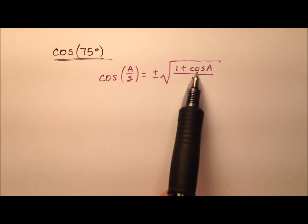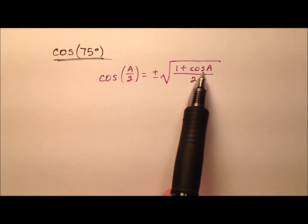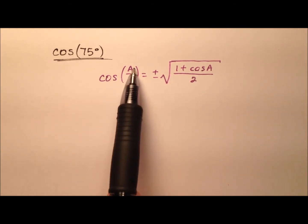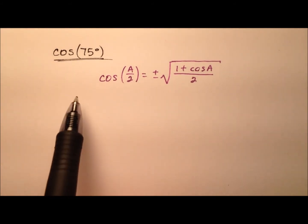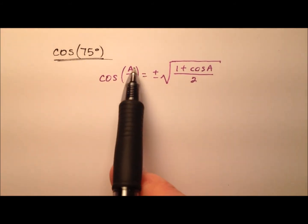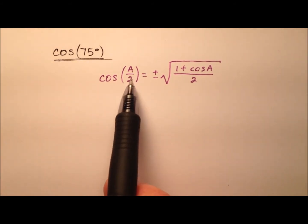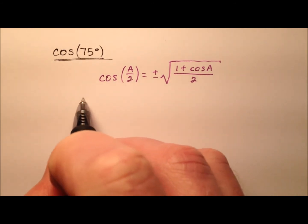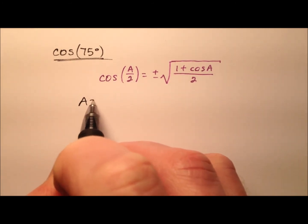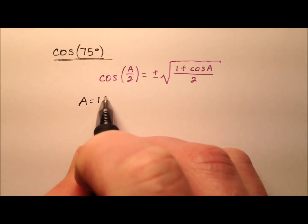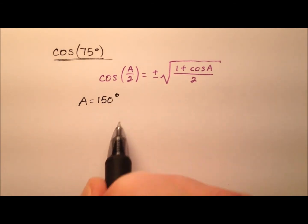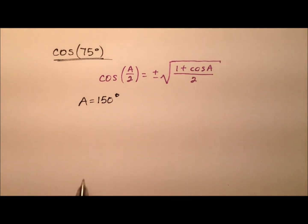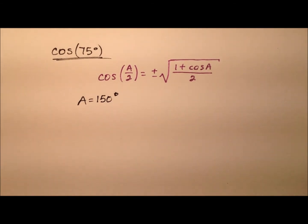Notice this square root expression includes cosine of a. If we're looking for 75 degrees, we need a over 2 to equal 75 degrees, which means in our case a is going to be 150 degrees, because half of 150 makes 75.